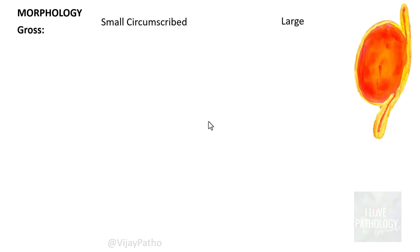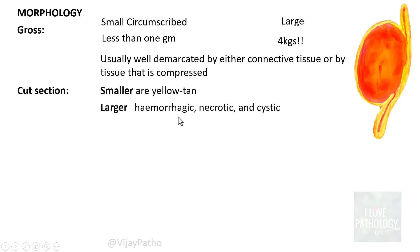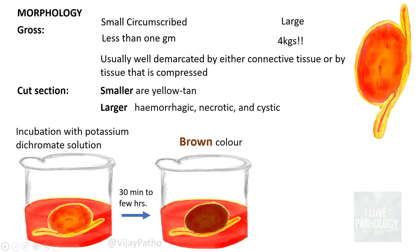On gross examination, pheochromocytoma can range from very small tumours — less than 1 gram — to extremely large tumours weighing up to 4 kg. They are usually very well demarcated, either by connective tissue or by compressed adjacent tissue. On cut section, smaller tumours are often yellow-tan, whereas larger tumours tend to be hemorrhagic, necrotic and cystic. When immersed in potassium dichromate solution, the cut surface turns brown after 30 minutes or a few hours — this is the chromaffin reaction.